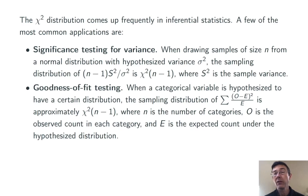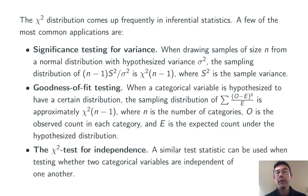Second common application is goodness-of-fit testing. When you have a categorical variable with a hypothesized distribution, the sampling distribution of the sum of (o-e)²/e is approximately chi-squared with n minus 1 degrees of freedom, where n is the number of categories, o is the observed count in each category, and e is the expected count under the hypothesized distribution. Finally, there's a chi-squared test for independence that works in a fairly similar way to the goodness-of-fit test. This is used for testing whether two categorical variables are independent of one another or dependent upon one another.